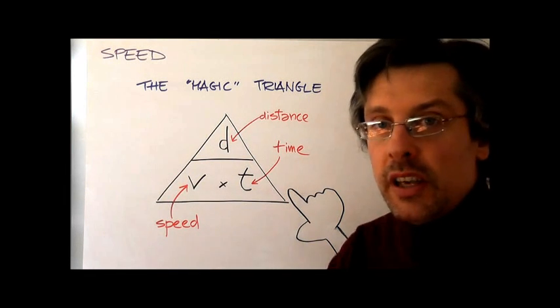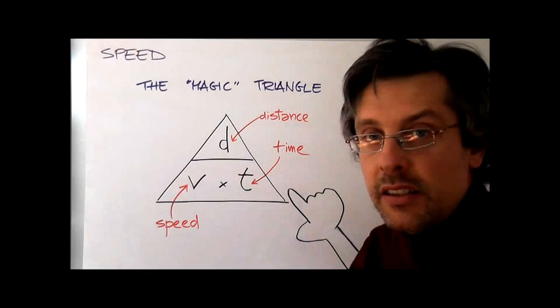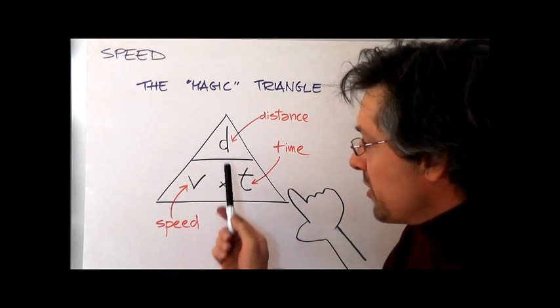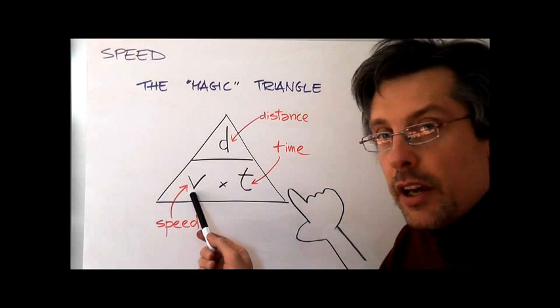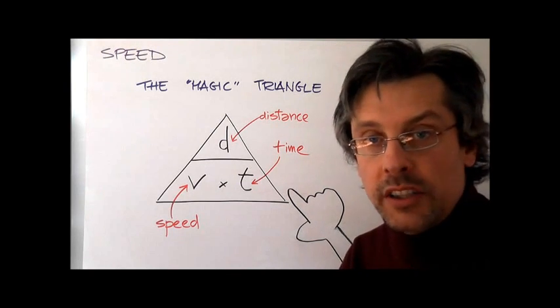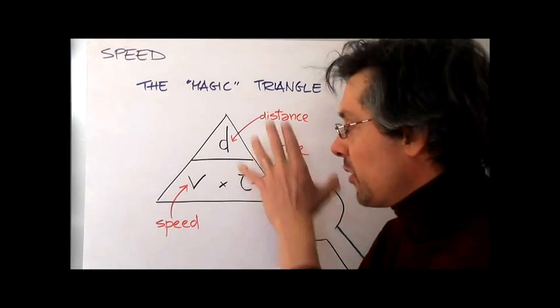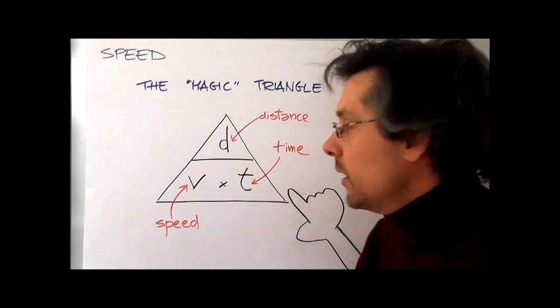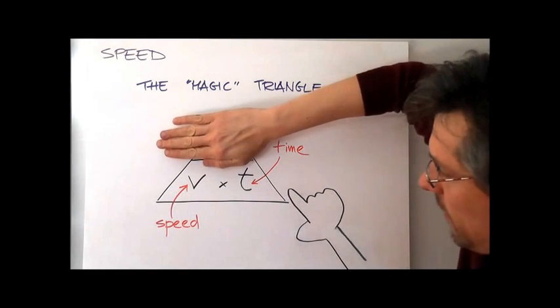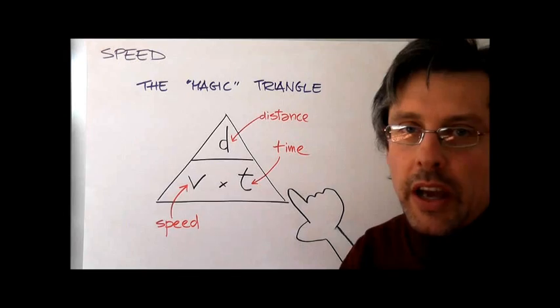Every time you have a formula which is given by a ratio, you can work out a triangle pretty much like this one. We will see other examples with density, with pressure, and with other physical quantities. In this case, you will see that the triangle is built with distance on top, speed here, and time here. And how does this work? Simply, you have to see what is the quantity between these three that you need to find, and then you simply cover it. Usually you will cover it with a finger, but now since this triangle is pretty big, you will need your whole hand. Let's say, in this case, I want to find the speed. You see, it's distance over time. If I want to find distance, it's speed times the time. I want to find the time, it's distance over speed. Now, let's see this thing in practice.